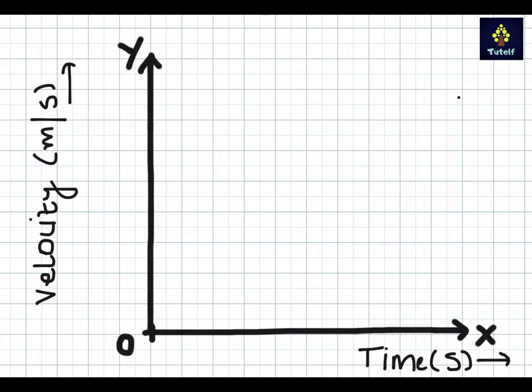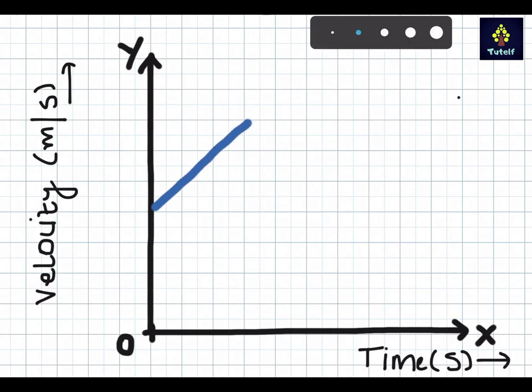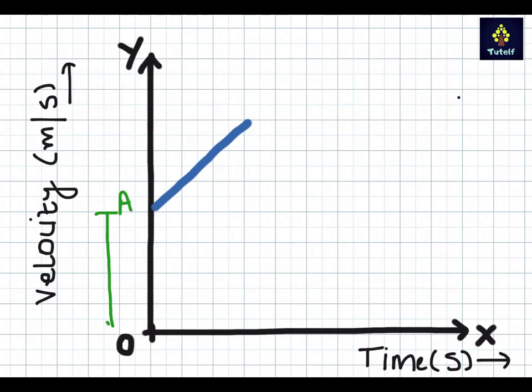After I have drawn my velocity and time, since it is a uniform acceleration with some initial velocity, I will make the graph for the same. Now I have drawn the graph for the velocity time for an object moving with uniform acceleration with some initial velocity. So this point A marks the initial velocity that the object has. Initial velocity is represented by the letter U. So this is my U meter per second.